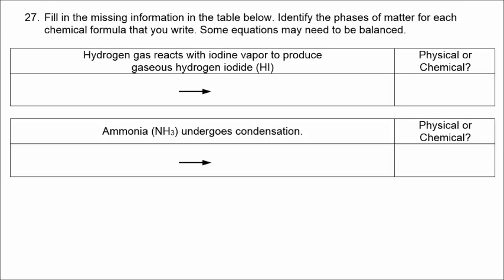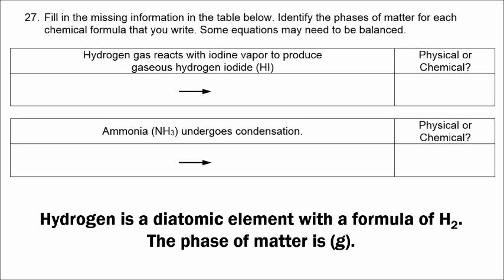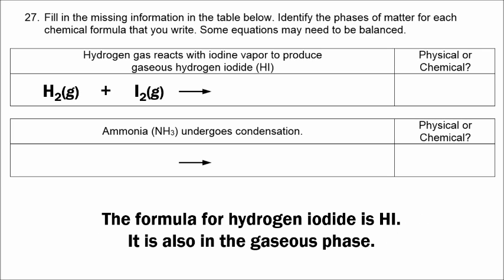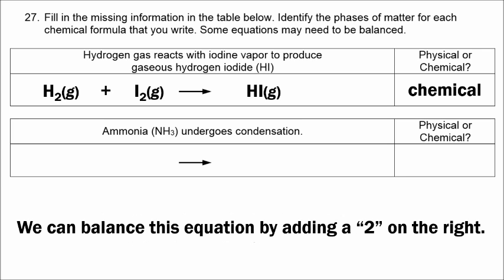The next example says hydrogen gas. Hydrogen is a diatomic element written as H2, in the gas phase. It reacts with iodine vapor — iodine is also diatomic, written as I2, and vapor means it's in the gaseous phase — to produce gaseous hydrogen iodide, HI. This is a chemical change. To balance the equation, we put a 2 in front of the HI on the right.